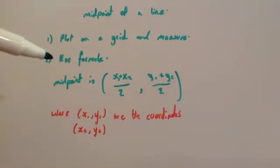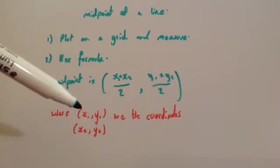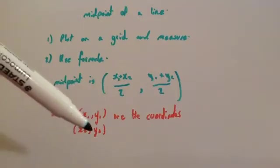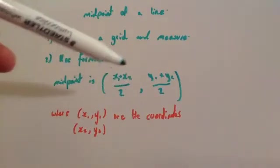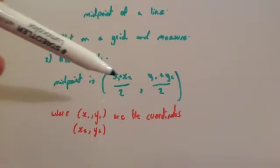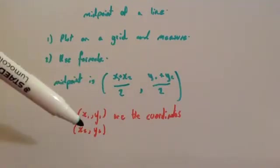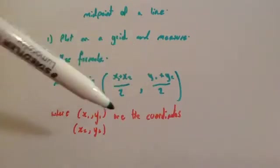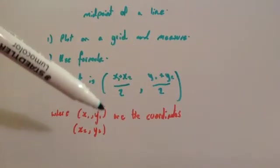The second method is, if you've got the two coordinates x1, y1 and x2, y2, to get the x-coordinate of the midpoint you add the two x-coordinates together and then you half it. Same for the y-coordinates, so you add the two y-coordinates together and you half it.